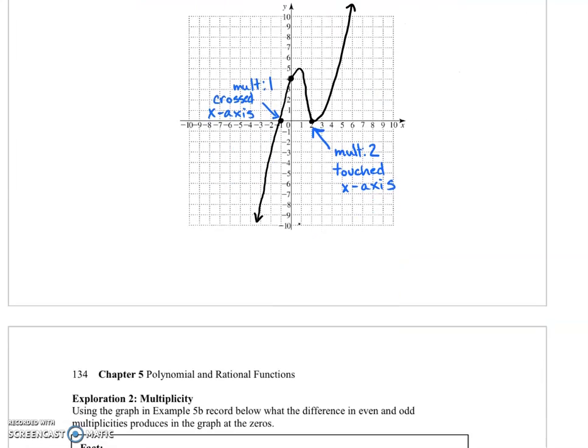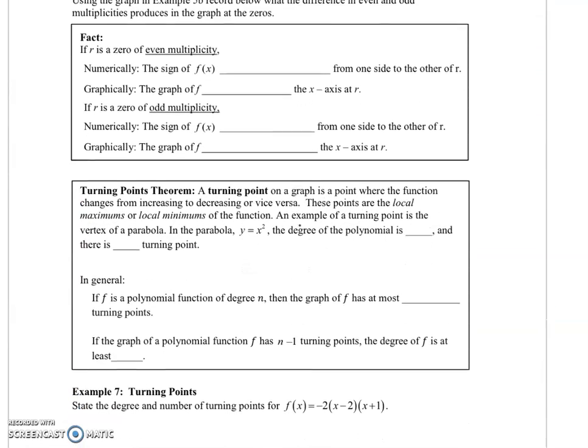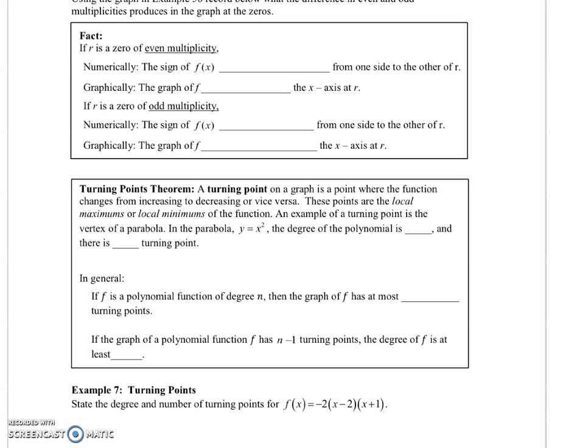So we can make some generalizations here. If r is a zero of even multiplicity, then numerically the sign of f(x) stays the same from one side of r to the other. And so graphically the graph of f just touches the x-axis at that r value.